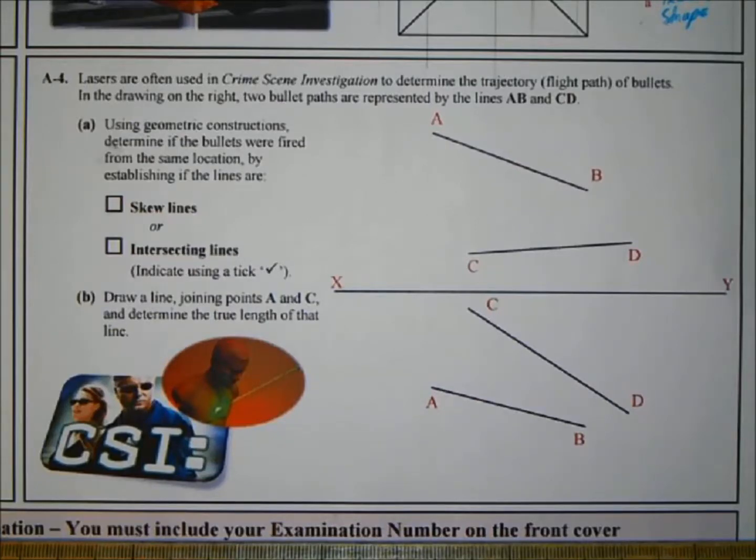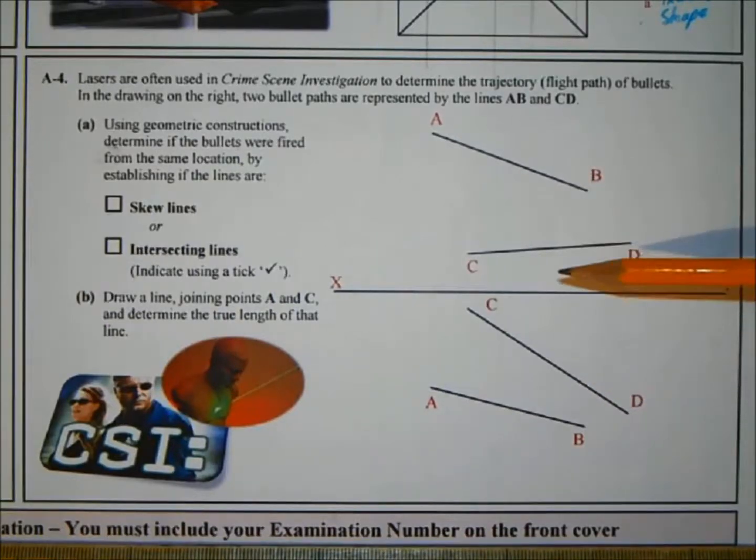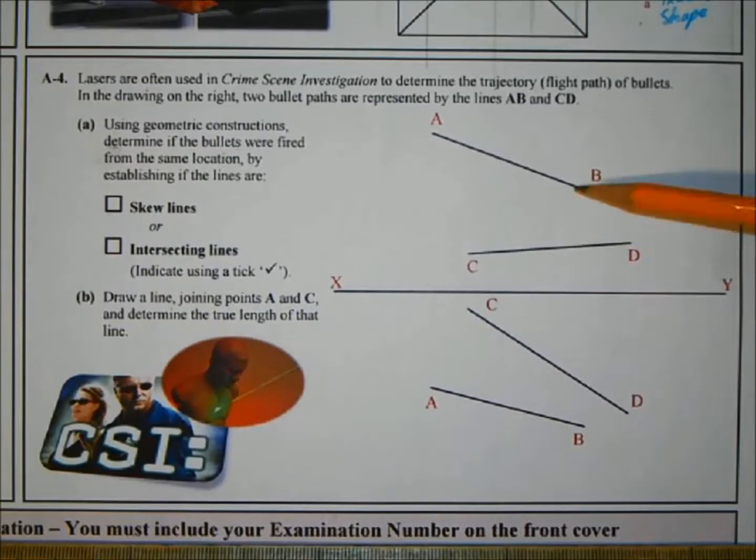So first, if they ask you to determine if they're skew lines or intersecting lines, one way to do it is if they were crossing in the elevation and also crossing in the plan, you could project down where they crossed from the elevation to the plan, and if they're directly above each other, then they're definitely intersecting lines. But in this case, we don't have them crossing.